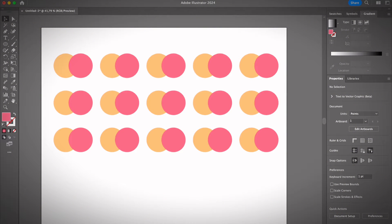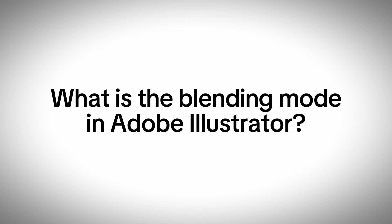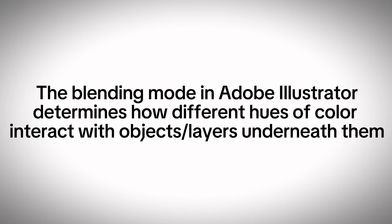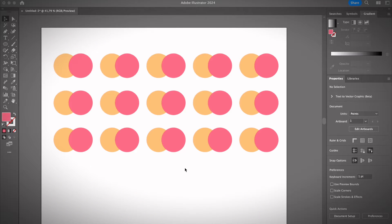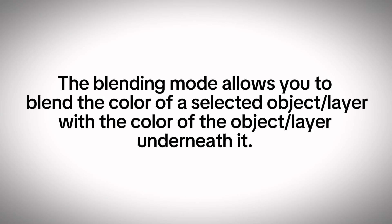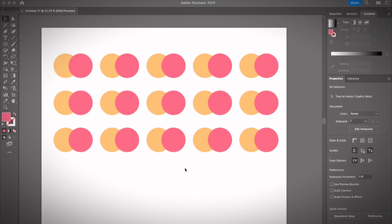Before we jump into the steps, you should first get an idea of what blending modes are. The official explanation is that blending modes in Adobe Illustrator determine how different hues of colors interact with various objects or layers underneath them. My version is that blending modes allow you to blend the color of a selected object, group, or layer with the color of the underlying object or image.